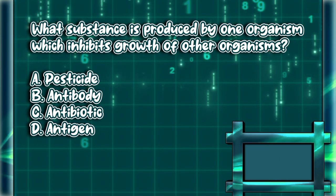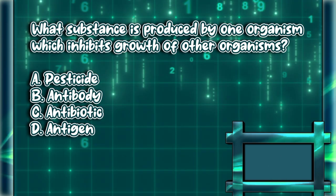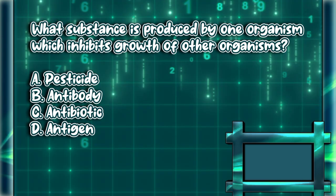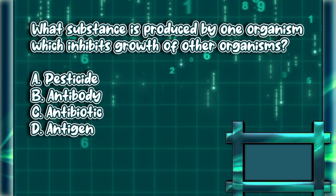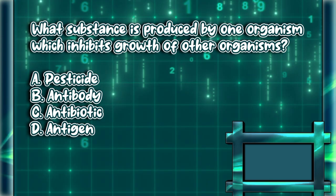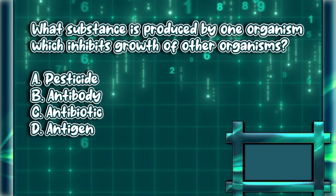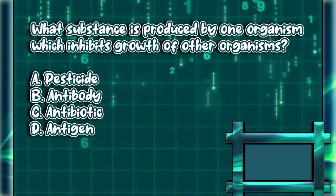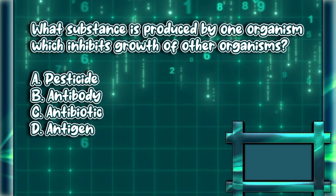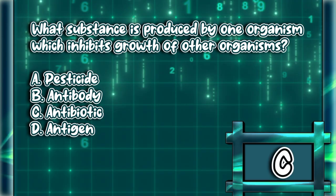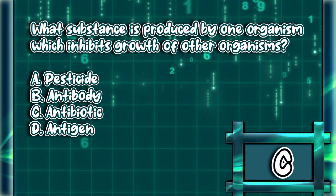What substance is produced by one organism which inhibits growth of other organisms? A. Pesticide. B. Antibody. C. Antibiotic. D. Antigen. The answer is letter C.